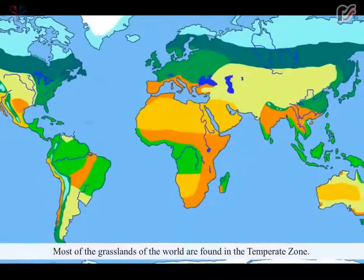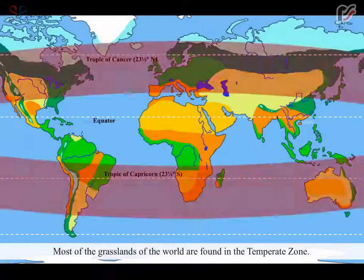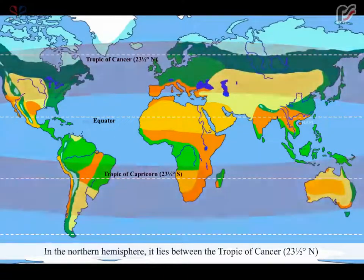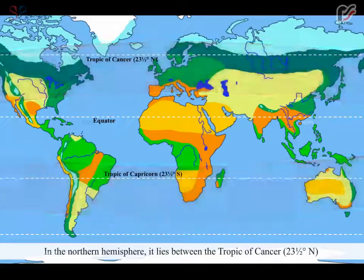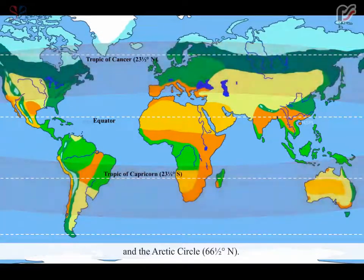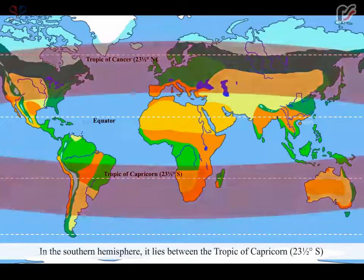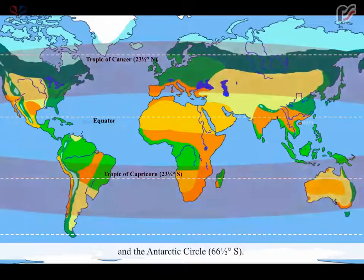Most of the grasslands of the world are found in the temperate zone. This zone lies in both hemispheres. In the northern hemisphere, it lies between the Tropic of Cancer (23.5 degrees north) and the Arctic Circle (66.5 degrees north). In the southern hemisphere, it lies between the Tropic of Capricorn (23.5 degrees south) and the Antarctic Circle (66.5 degrees south).